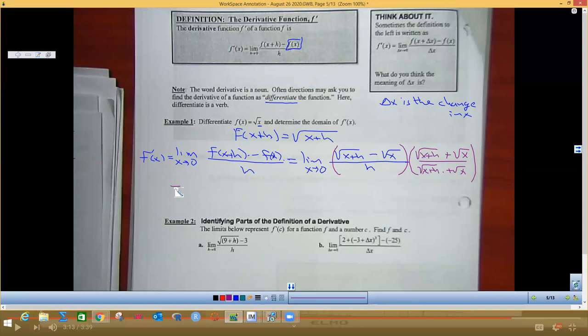So when I FOIL conjugates, I'm going to get over here the limit as h approaches 0, and when you FOIL conjugates you square the first term minus the square of the last term. On the bottom you don't multiply them out because our whole goal is to get rid of the h.